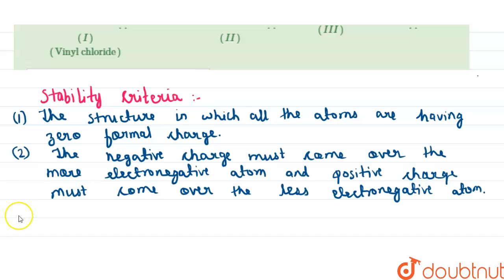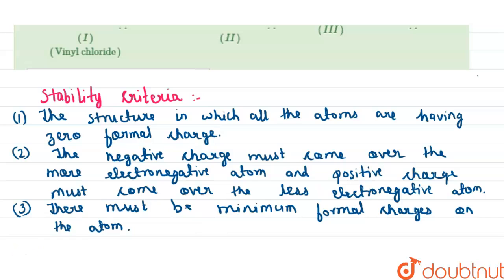The third criteria is there must be minimum formal charge on each atom if the formal charges on the atoms is not equal to zero. Now considering these criteria of stability,